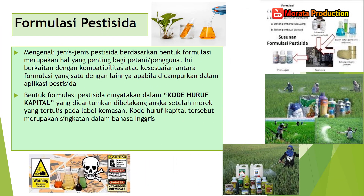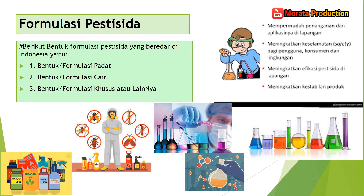Mengenali jenis-jenis pesticida berdasarkan bentuk formulasi merupakan hal yang penting bagi petani atau pengguna. Ini berkaitan dengan kompatibilitas atau kesesuaian antara formulasi yang satu dengan lainnya apabila dicampurkan dalam aplikasi pesticida. Bentuk formulasi pesticida ini dinyatakan dalam kode huruf kapital yang dicantumkan di belakang angka setelah merek dagang yang tertulis pada label kemasan. Kode huruf kapital tersebut merupakan singkatan dalam bahasa Inggris. Di samping sebelah kanan ada contoh susunan formulasi pesticida dan juga petani yang sedang aplikasi di sawah.